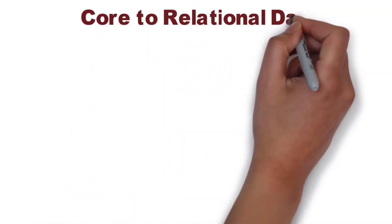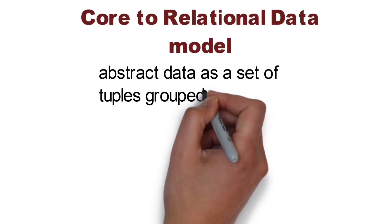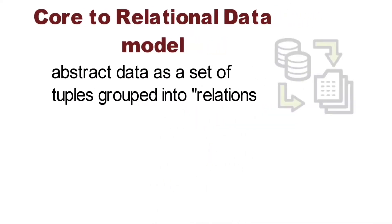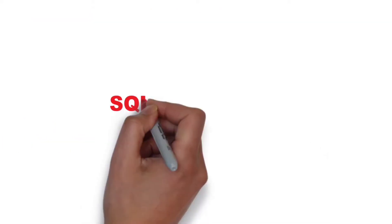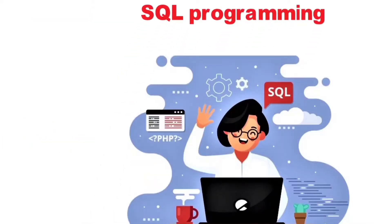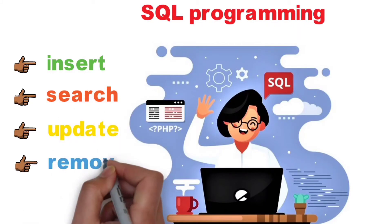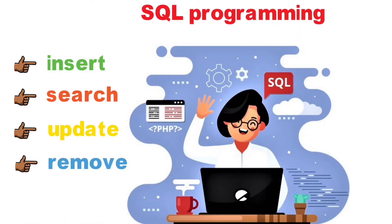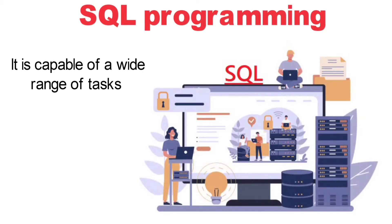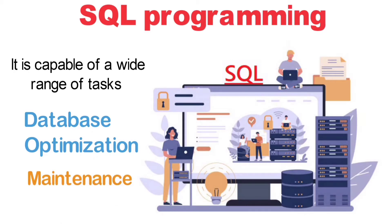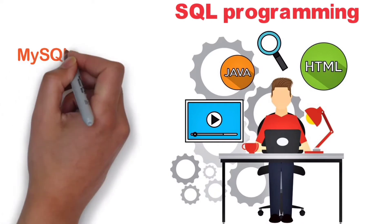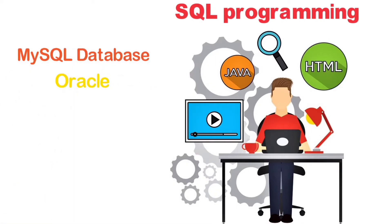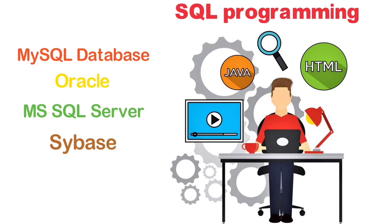The core of a relational data model is to abstract data as a set of tuples grouped into relations, which allows for abstraction over actual data representation and access paths. SQL programming may be used to insert, search, update, and remove database records. It is capable of a wide range of tasks including database optimization and maintenance. SQL is used in relational databases such as MySQL, Oracle, MS SQL Server, Sybase, and others.